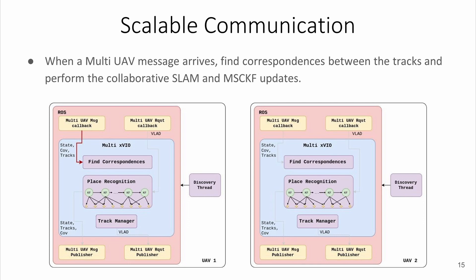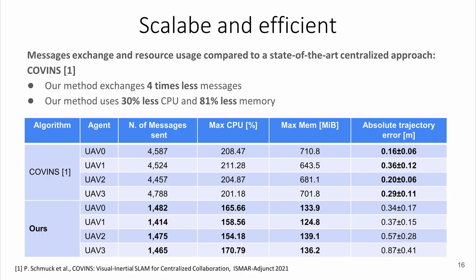The results of our approach against the state-of-the-art centralized collaborative system COVINS show that our work can use a quarter of the messages exchanged within the system and requires much less CPU and memory compared to the other, underlining the lower processing power needed for decentralized methods.